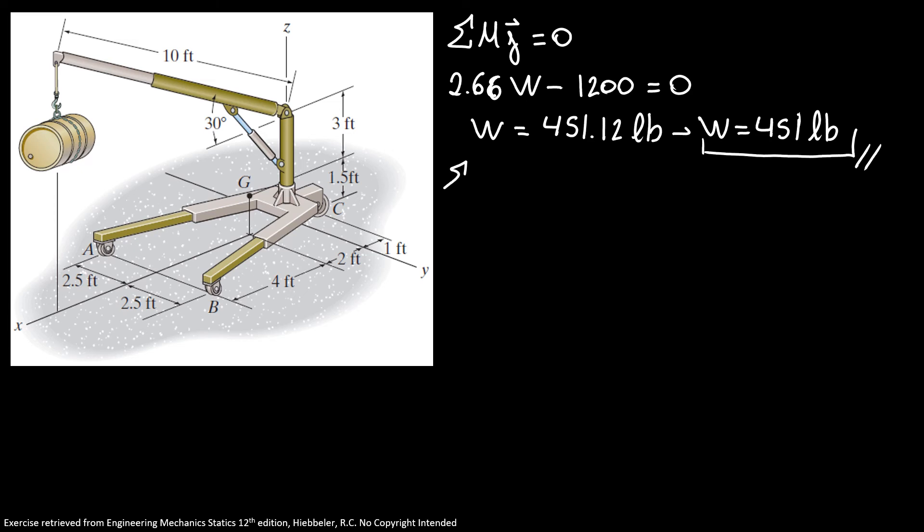The sum of moments in i direction is equal to 0. So, -2.5 normal A plus 2.5 normal B is equal to 0, and then we have normal A is equal to normal B.